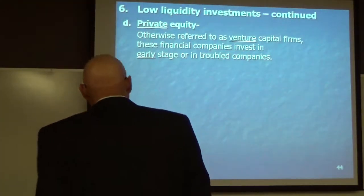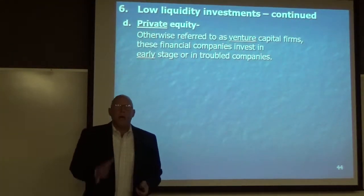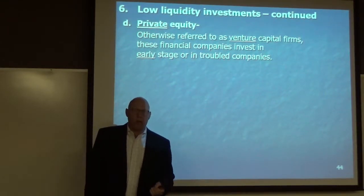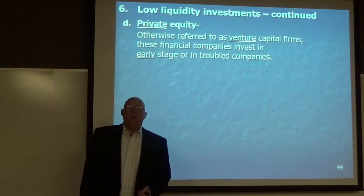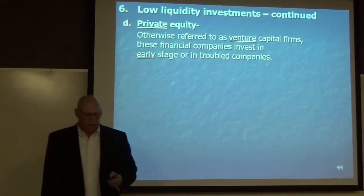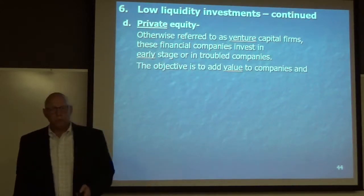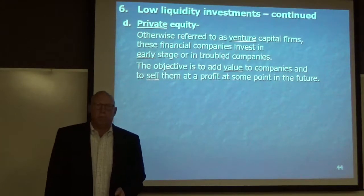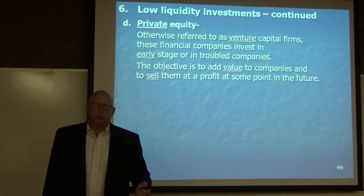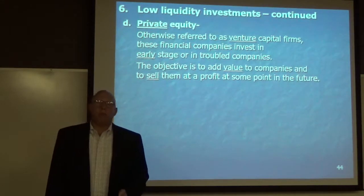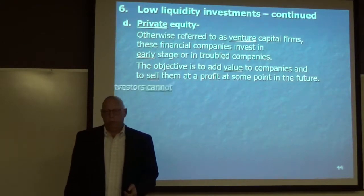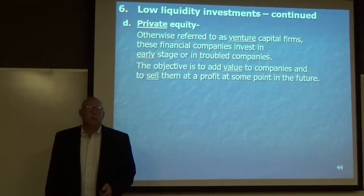But when Warren Buffett or Mitt Romney buy a company, they directly influence management. They're trying to add value — they want to buy the company low and sell it high. That's what private equity is. The objective: add value to the companies and then sell them at a profit. If you don't add long-term value, you're not going to sell the assets at a profit. Some people call these people vultures — they are not vultures. They are trying to add value, because if they don't, they're going to lose money.